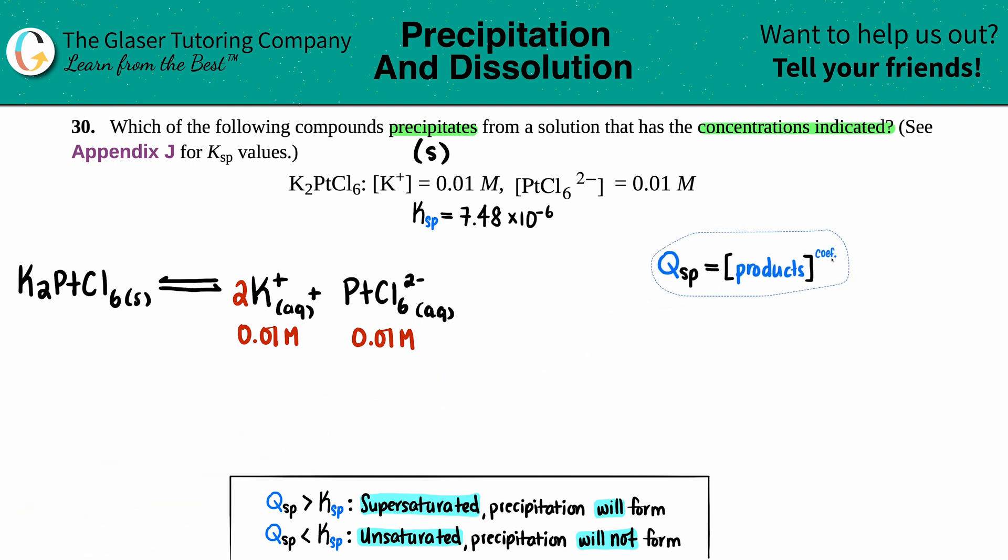Now I'm going to use my Qsp equation to find out what the Qsp is. Qsp is just going to be equal to the two products, so I have K+ times PtCl6 2-. I need to raise the potassium to the second power because there was a two in the front. Keep in mind that you don't have to raise the PtCl6 because there was only one here.